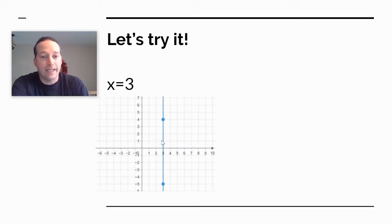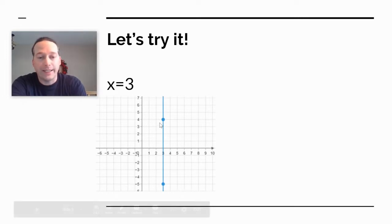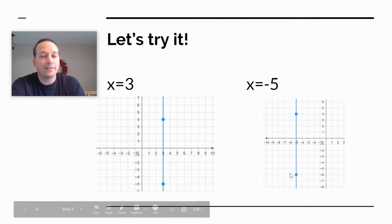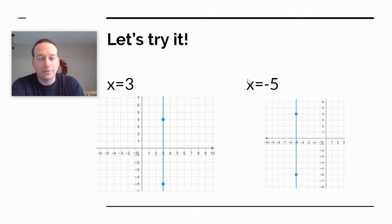So regardless of whatever y is, x is always going to be 3. So if y is 1, x is 3. If y is 4, x is 3. If y is negative 4, x is 3. So it would just be a straight line up and down at 3, where x is 3. Same thing, x equals negative 5, no different. So regardless of what y is, x is always going to be negative 5. So you're just going to go straight up and down at x is negative 5. So it tells you, whatever the number is, whatever that number is, you just draw a straight line up and down for that one.